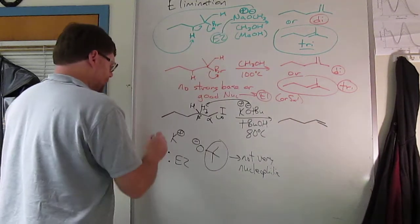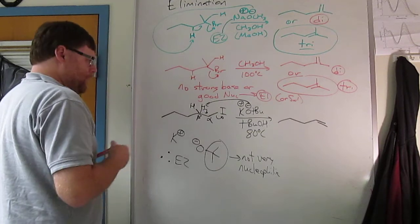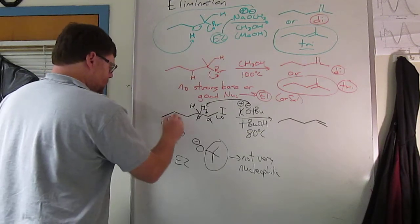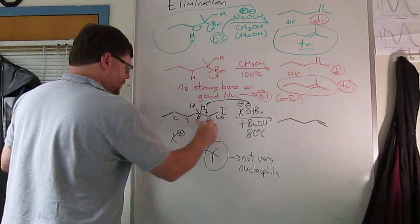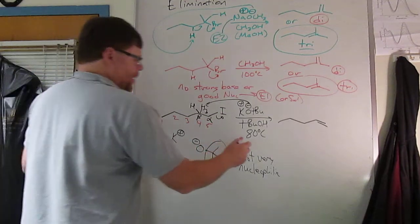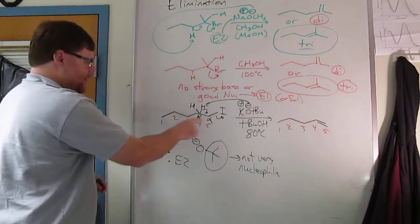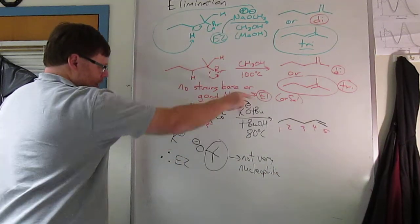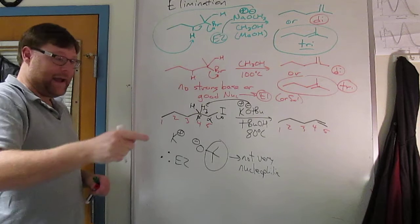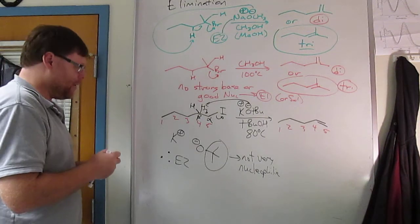Make sure you count the number of carbons correctly. So we have one, two, three, four, five carbons. Got to come up with five carbons over here. There you go. So a lot of times people will want to just kick off the iodide and make a double bond there, and that actually adds a carbon. So be sure you're counting carbons correctly.